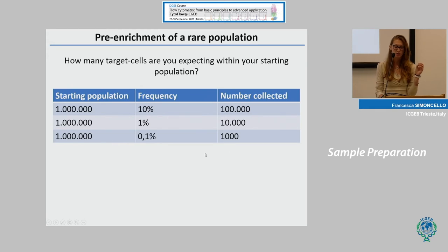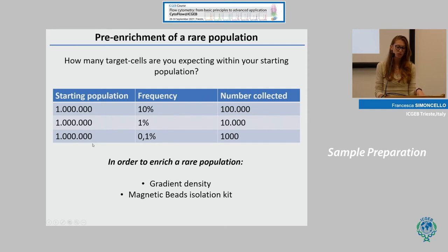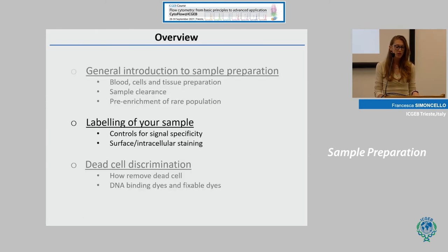Another point to consider is how many target cells you expect within your starting population. For example, if you acquire 1 million cells and your target population is 1%, you collect 10,000 cells, which is quite enough. However, if the frequency is 0.1%, you acquire only 1,000 cells, which from a statistical point of view is not enough. You could acquire a higher number of cells, but this wastes time and can block the instrument. Another option is to enrich rare populations using density gradient such as Ficoll, or isolation kits based on magnetic beads.